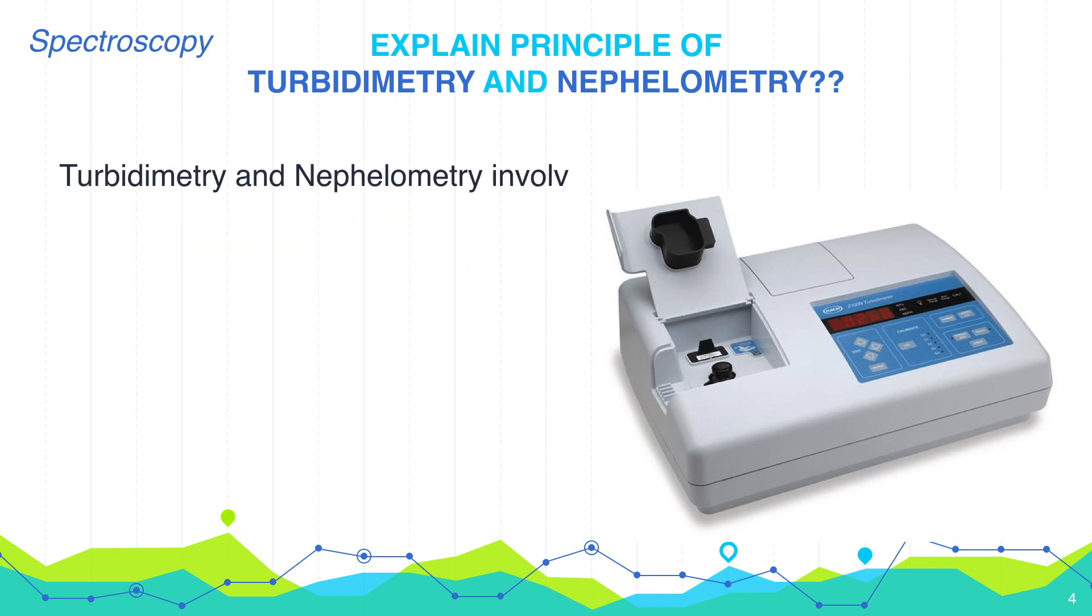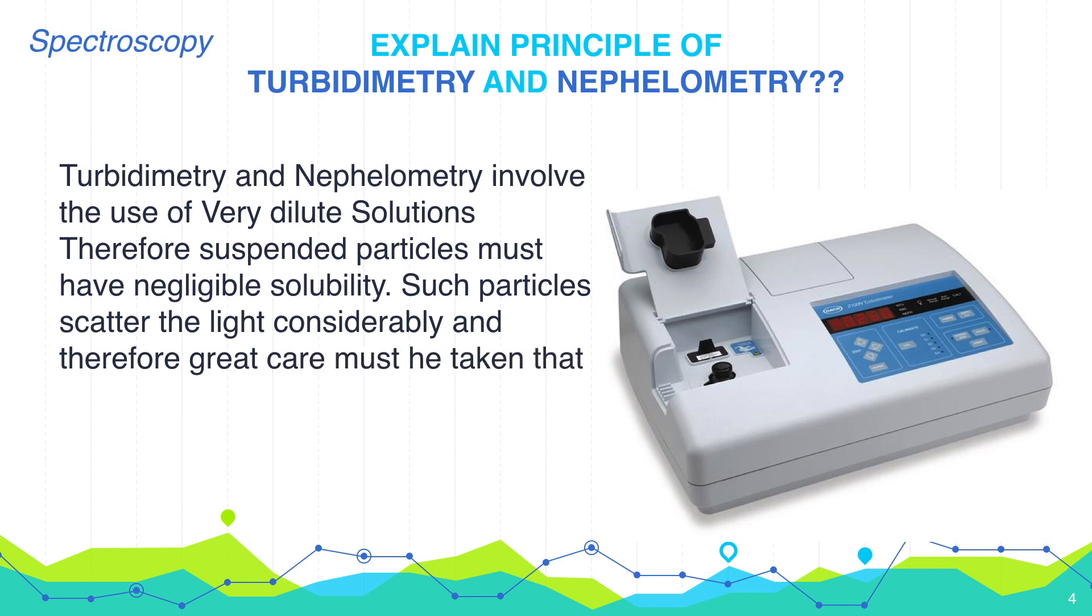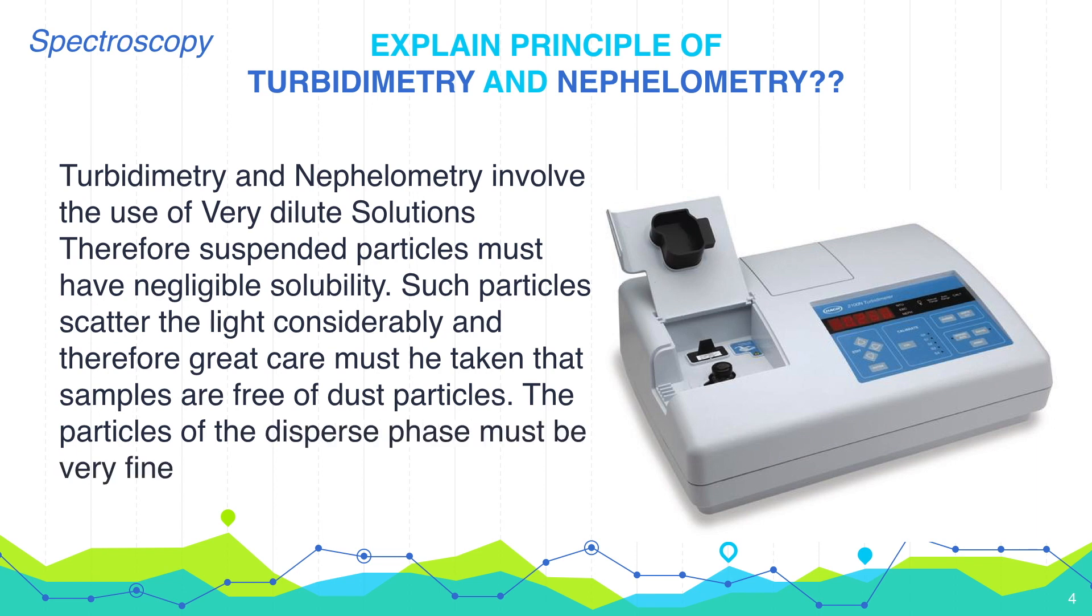Turbidimetry and Nephelometry involves the use of very dilute solutions. Therefore, suspended particles must have negligible solubility. Such particles scatter the light considerably. And therefore, great care must be taken that samples are free from dust particles. The particles of the dispersed phase must be very fine, so that they do not settle down rapidly.